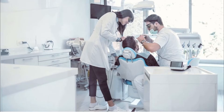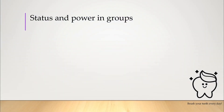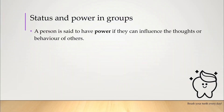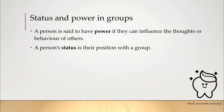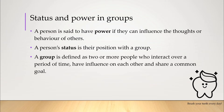Power relations are everywhere and are what we're going to be looking at in these next few psychology lessons. First, as usual, some key definitions. A person is said to have power if they can influence the thoughts or behavior of others. A person's status is their position in a group, and a group is defined as two or more people who interact over a period of time, have influence on each other, and share a common goal.